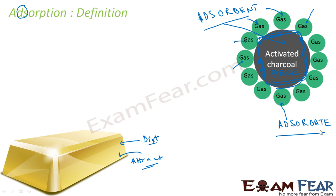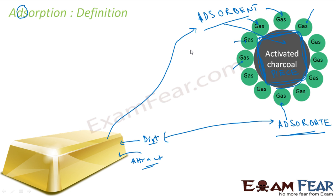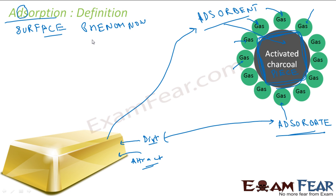Please note: adsorption is a surface phenomenon — it happens only on the surface. So to make adsorption more effective, we need to increase the surface area. This can be done by breaking the substance into small particles. For example, if you have a cuboid and break it into 100 small cuboids, you end up increasing the surface area, as we will verify with a numerical example.